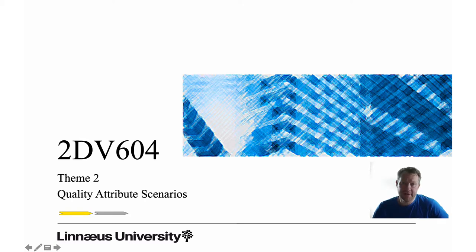Welcome to this second lecture in the second theme, Architecture Requirements, in the 2db604 software architecture course. This lecture gives you more detail about quality attribute scenarios, which is a specification technique for architecture requirements introduced in the course literature and promoted throughout the book.